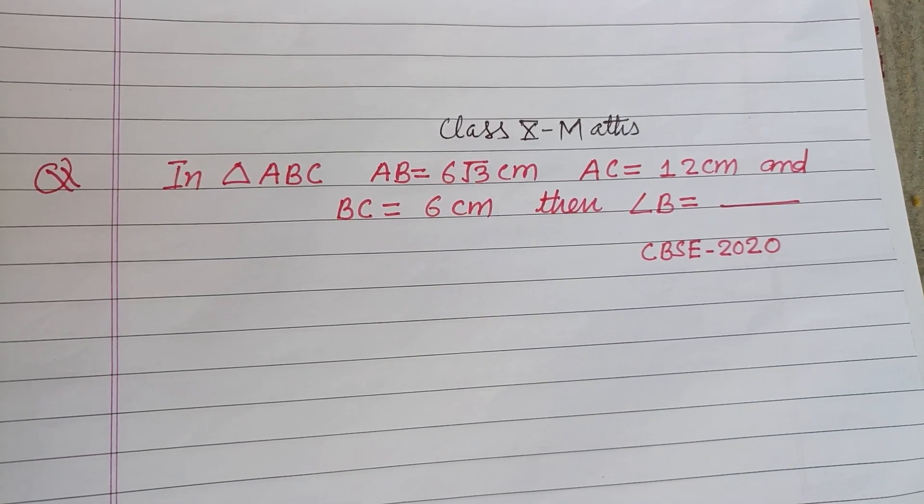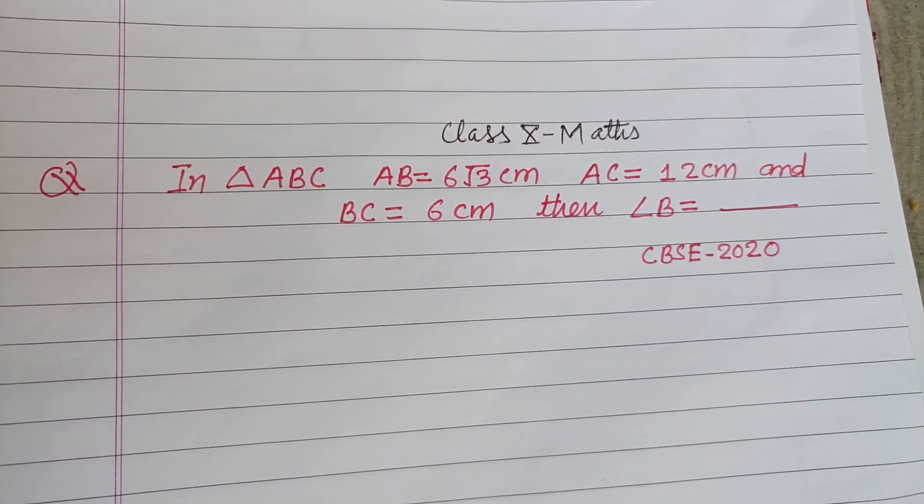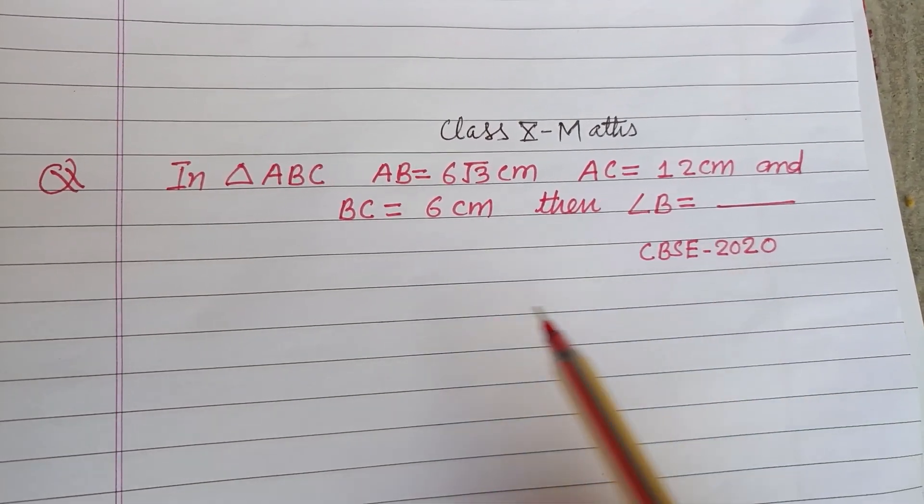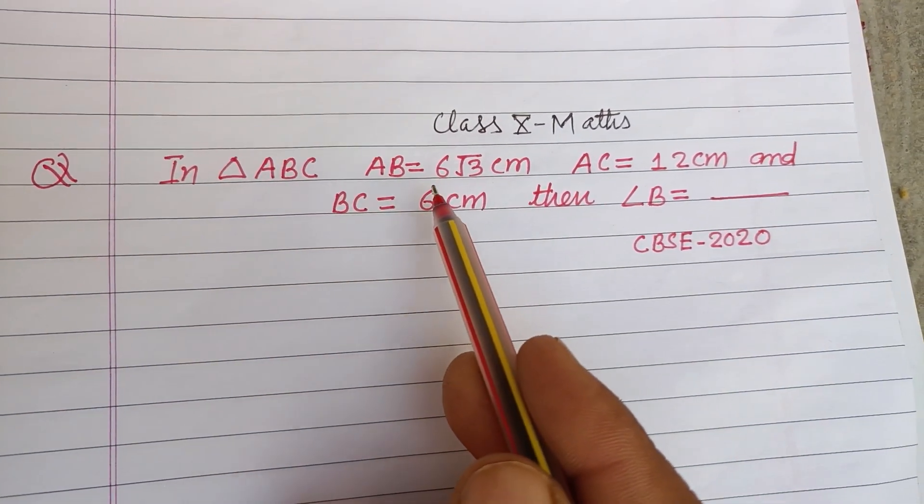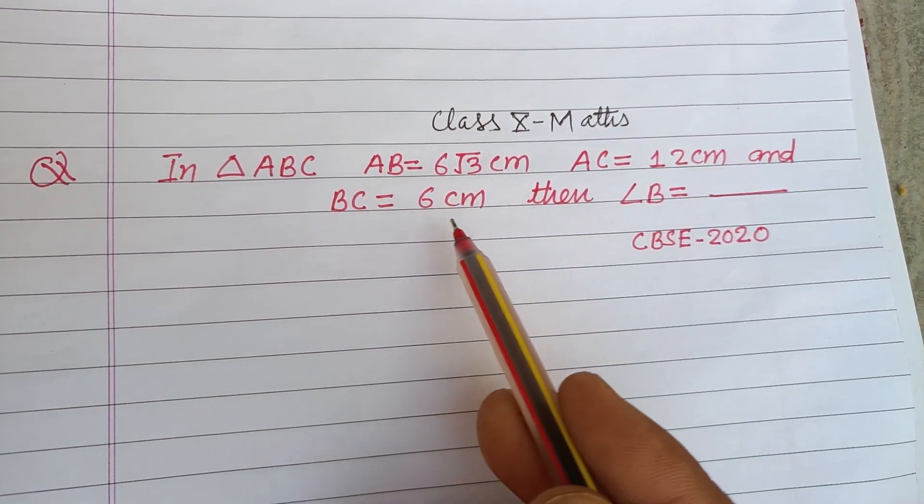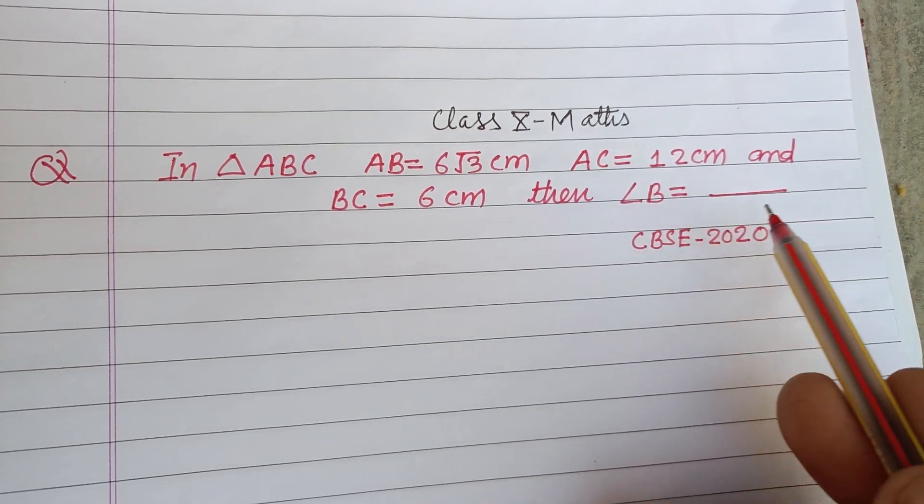Hello viewers, warm welcome to this YouTube channel. This is a question from CBSE Class 10 2020 board exam. In triangle ABC, AB is given as 6√3 centimeter, AC is given as 12 centimeter, and BC is 6 centimeter, then angle B is...